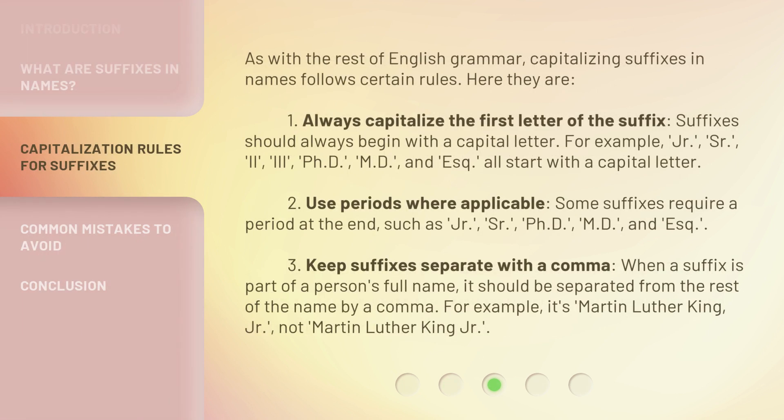As with the rest of English grammar, capitalizing suffixes in names follows certain rules. Here they are. Rule 1: Always capitalize the first letter of the suffix. Suffixes should always begin with a capital letter. For example, Junior, Senior, II, III, PhD, MD, and Esq. all start with a capital letter.